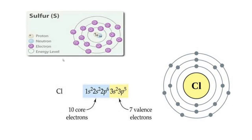You can see that in sulfur, there are two inner electrons, in the next shell there are 8 electrons, and in the outermost shell there are 6 electrons. There are two vacancies available, so it can have a minus 2 oxidation state. With 6 electrons, it can have a positive 6 oxidation state, which is the same as its group number 6A. For chlorine, there are 7 valence electrons, so it has only one vacancy available and can have a minus 1 oxidation state.